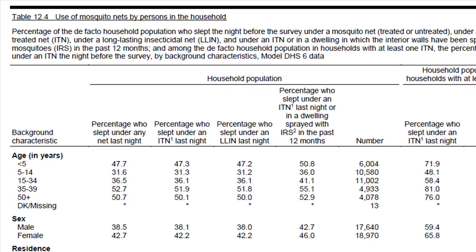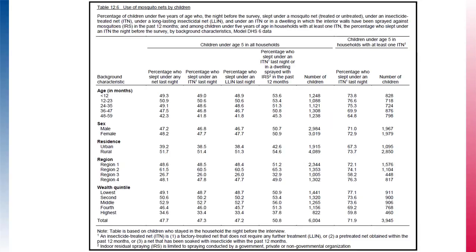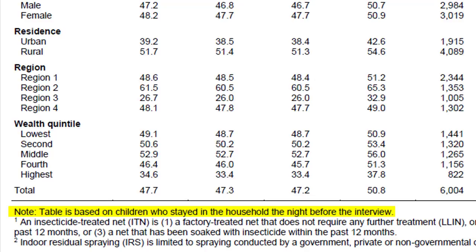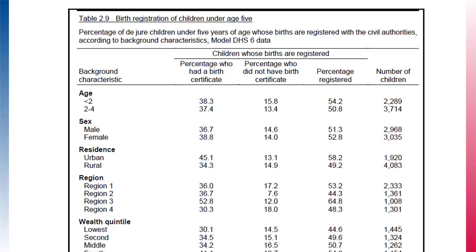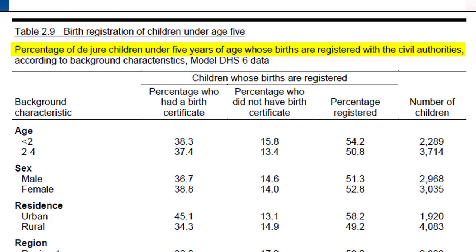For example, in the model dataset table on use of mosquito nets by children, we know it is limited to de facto children because of the note at the bottom that says the table is based on children who stayed in the household the night before the interview. Some tables are limited to only the de jure population. For example, in the model dataset table on birth registration of children under age 5, the table is limited to only de jure children, meaning it only shows registered births by children who are usual residents.